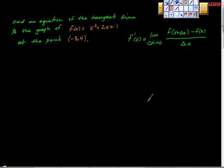I'm going back a little bit to find the equation of the tangent line to the graph of f of x equals x squared plus 2x plus 1 at the point negative 3, 4.